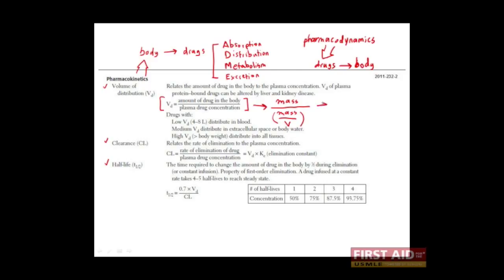Mass divided by mass over volume, of course, leaves us with just the volume. This is the first important thing to realize about the volume of distribution. As its name suggests, its units are given in volume, and often in liters. Let's say that we've given somebody 1,000 milligrams of drug X.